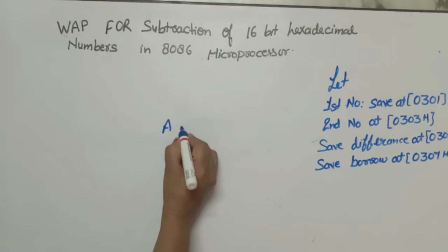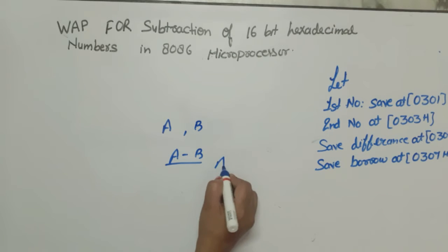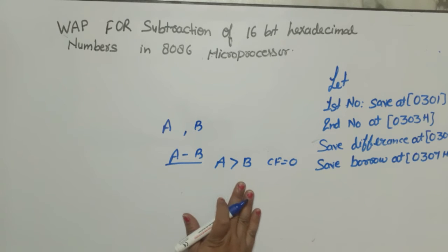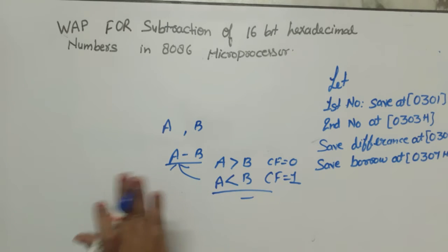One more thing, when we subtract suppose we have two numbers A and B, if we perform A minus B, in this case if A is greater than B then CF will be equal to 0 because we have minused from greater so borrow is not required. But if A is less than B and we perform subtraction, then in that case CF is equal to 1 means that borrow is required. So we have to use this concept here.